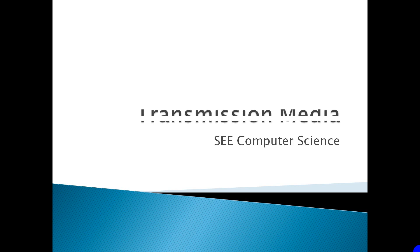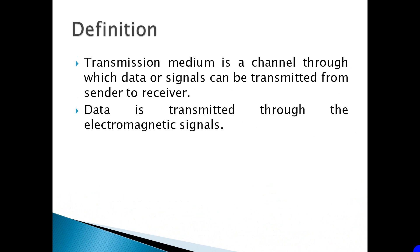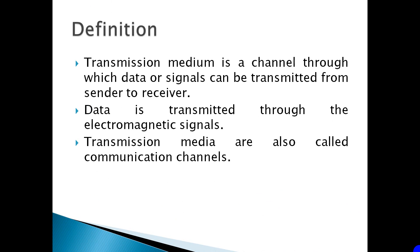Transmission Media. Definition: A transmission medium is a channel through which data or signals can be transmitted from sender to receiver. Data is transmitted in the form of electromagnetic signals. They are also known as communication channels or communication media.